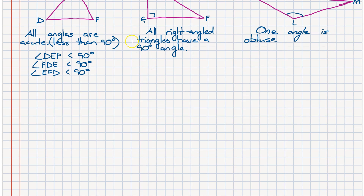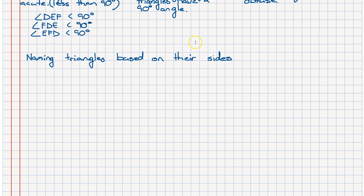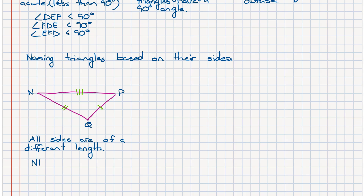Now we're going to look at naming triangles based on their sides. Once again there are three different triangles. The first has all sides of differing lengths — side NP is not equal to side PQ, and side PQ is not equal to QN. Notice the bar on top of these letters, which denotes we're talking about a distance or a side. This sort of triangle where all side lengths are different we call a scalene triangle.